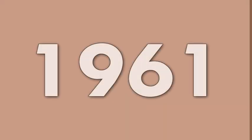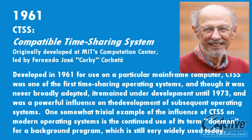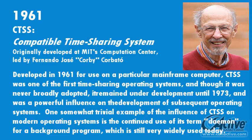Developed in 1961 at MIT's Computation Center, led by Fernando Jose Corbato, CTSS was one of the first time-sharing operating systems. Though it was never broadly adopted, it remained under development until 1973, and was a powerful influence on the development of subsequent operating systems. One somewhat trivial example of the influence of CTSS on modern operating systems is the continued use of its term, daemon, for background programs, which is still very widely used today.